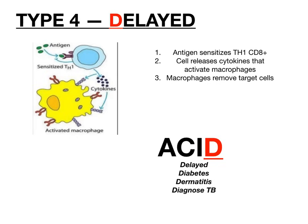This delayed mechanism is what's occurring with type 1 diabetes, contact dermatitis, and how you diagnose tuberculosis. The TB test requires you to come back after getting that little shot under your skin to see if there's any induration, because it's delayed — it doesn't happen right away. You have to come back 48 hours later to get it read because it's a delayed reaction; if it's going to be positive, it won't be positive until two days later. So type 4 hypersensitivity: D for delayed, diabetes, dermatitis, and diagnosing tuberculosis.